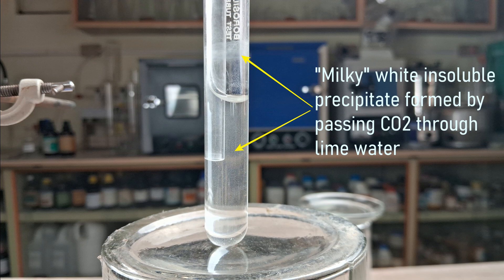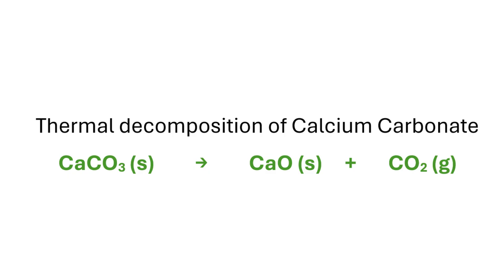The thermal decomposition of calcium carbonate follows the chemical equation shown here. Calcium carbonate decomposes and forms its breakdown products: calcium oxide and carbon dioxide. The identity of carbon dioxide is confirmed by passing the gas through lime water, which is chemically known as calcium hydroxide solution.